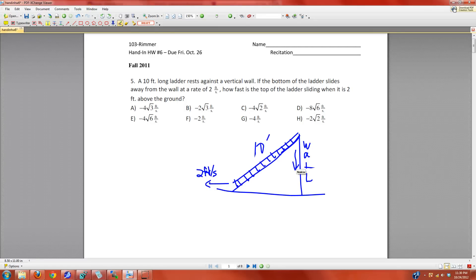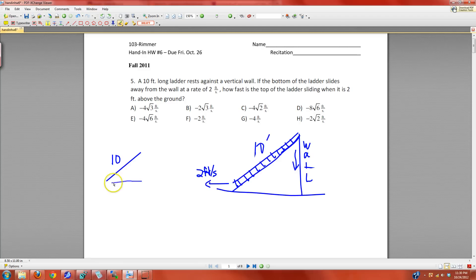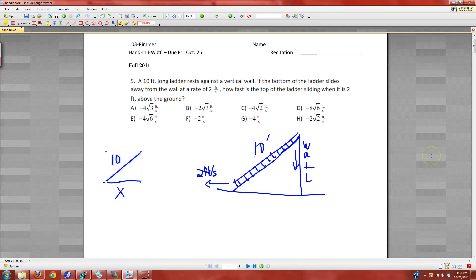We have the changing picture where the hypotenuse is 10. There's the distance from the wall, call that x. There's the height off the wall, we're going to call that y. And it's a right triangle.